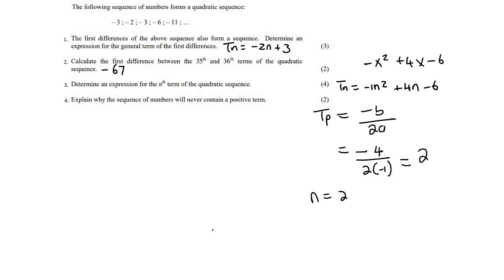That's not the answer. That's just the position or the term where the maximum number occurs. So what we then do is to work out that maximum value. Or we actually know what term 2 is already. Term 2 is minus 2. So they're telling us that the maximum number in this sequence is occurring at term number 2, and it has a value of minus 2. And so we can say that the maximum value is minus 2. And so therefore, the numbers will never contain a positive term.